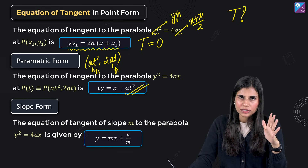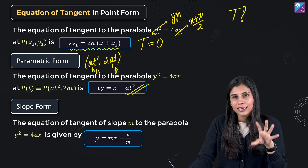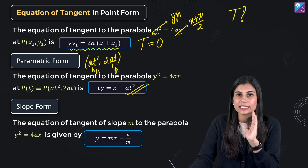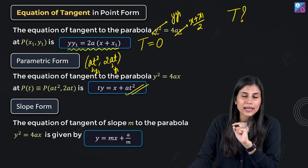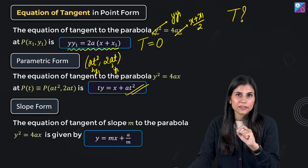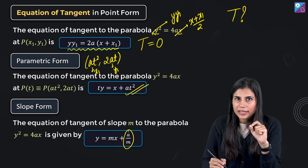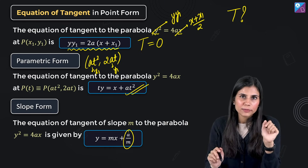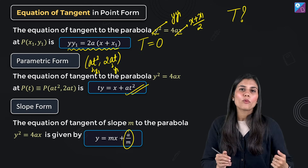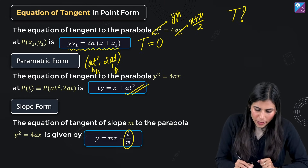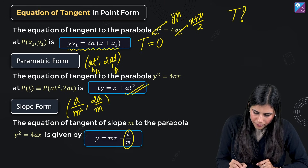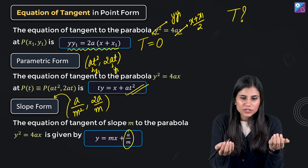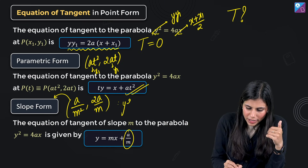Last is the slope form, which is extremely important. The condition of tangency for y² = 4ax is c = a/m. This means a line y = mx + c is tangent to the parabola if and only if the y-intercept c equals a/m. The point of tangency coordinates are (a/m², 2a/m). So when you have the slope, you can compute the coordinates of the point of tangency as (a/m², 2a/m) for the parabola y² = 4ax.